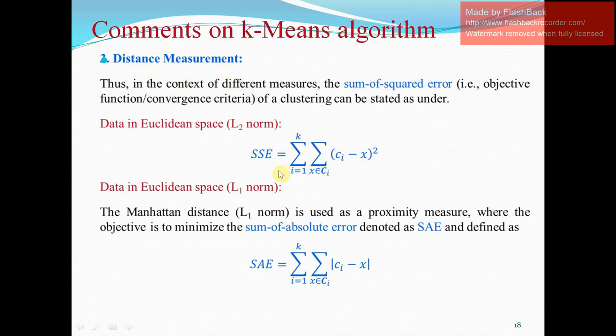For SSE, data in Euclidean space L2 norm, SSE is summation from i equals 1 to K, then sum of square of distance is given. And distance in Euclidean space, that is L1 norm, gives the sum of absolute error, that is SAE, with formula summation of i equals 1 to K, and summation of x belongs to CI, for mod of CI minus x, that is the difference of the distance.